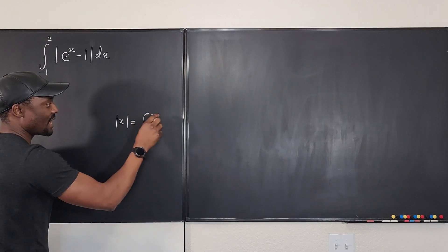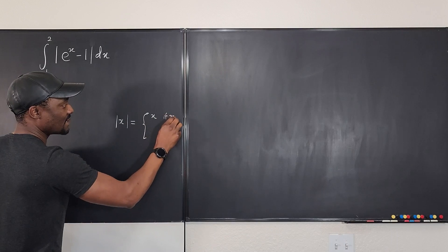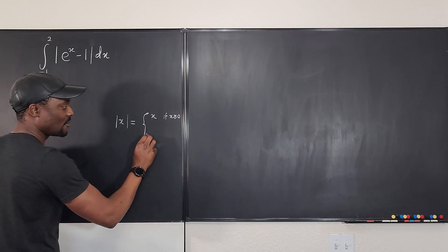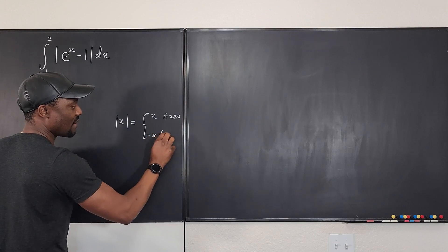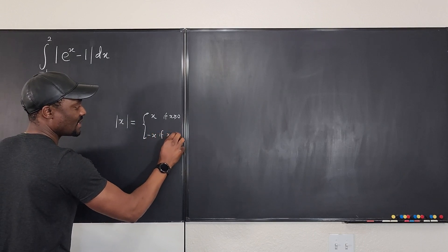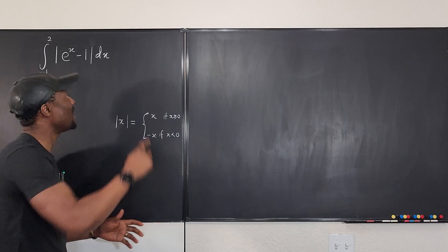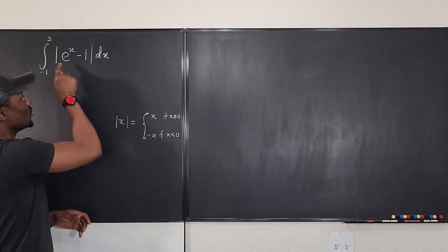You say that x will always be x if x is positive, if x is greater than or equal to zero, and x will be negative x if x is less than zero. These two conditions will always be there. And that's what you're going to apply to this.